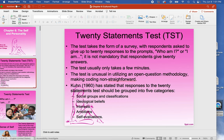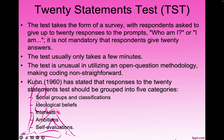Back in 1960, Kuhn came up with a test called the 20 Statements Test. It's a very simple test. You have 20 lines, and you're supposed to fill them up with who you are. You make 20 statements about yourself, and you have a select amount of time to do it in, like 15 or 20 minutes. It's unusual in utilizing an open question methodology, making coding non-straightforward, so it's really kind of difficult to score.